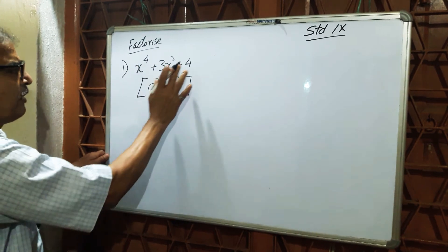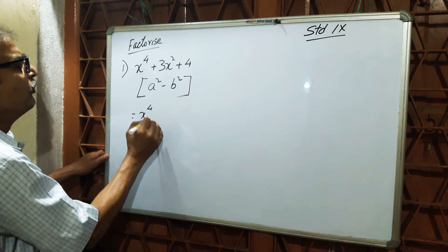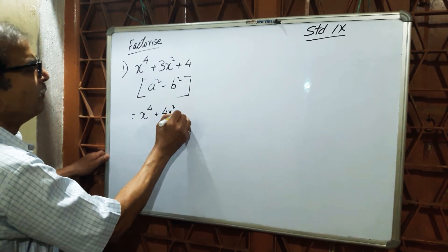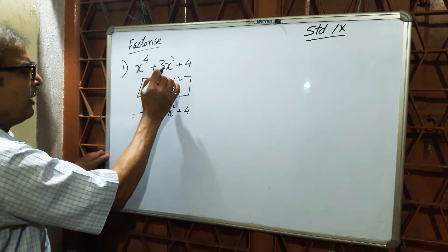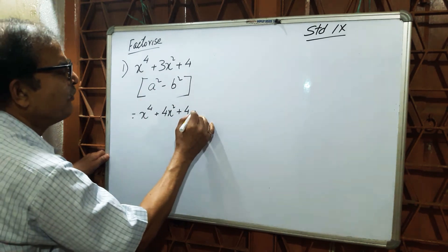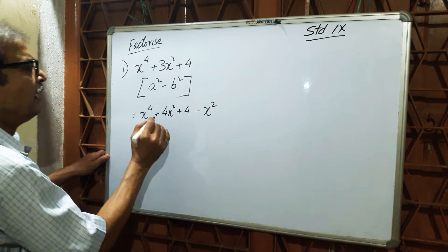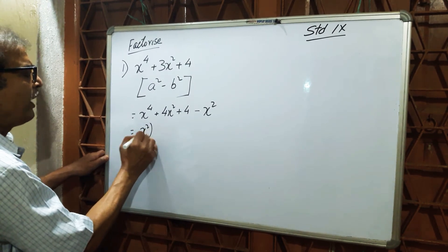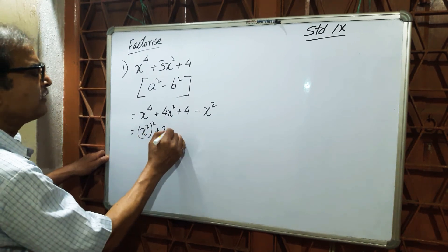Now see, x to the power 4 plus 3x squared plus 4, you can write as x to the power 4 plus 4x squared plus 4. Here is given 3x squared, but you have taken 4x squared, so one x squared more. Now you just get it minus x squared. You can write this as x squared squared plus 2 into x squared.